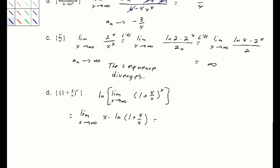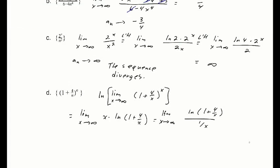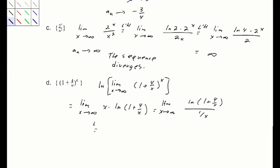We rewrite the expression as the limit as x goes to infinity of the natural log of (1 plus 4 over x) over (1 over x). Now we're in the 0/0 indeterminate form, so we apply L'Hôpital's rule. The derivative of the numerator is negative 4 over x² divided by (1 plus 4 over x), which is the derivative of the natural logarithm.